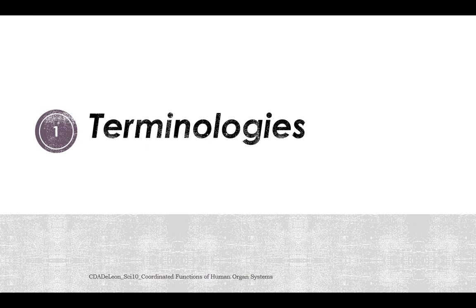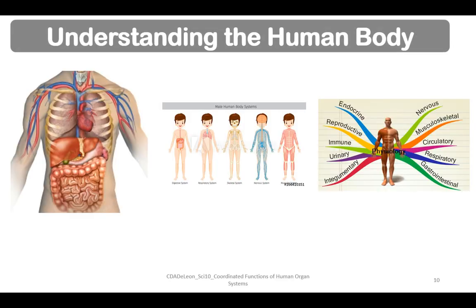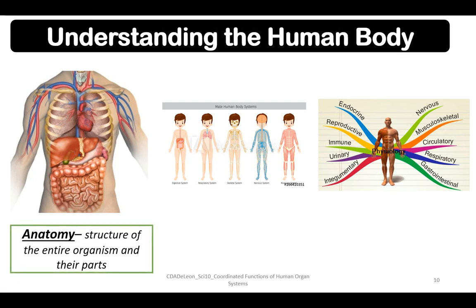Specifically the nervous system, endocrine, and the reproductive system. First, we have anatomy. Anatomy is the structure of the entire organism and their parts — the organism and the individual organs. That is the scope of anatomy.